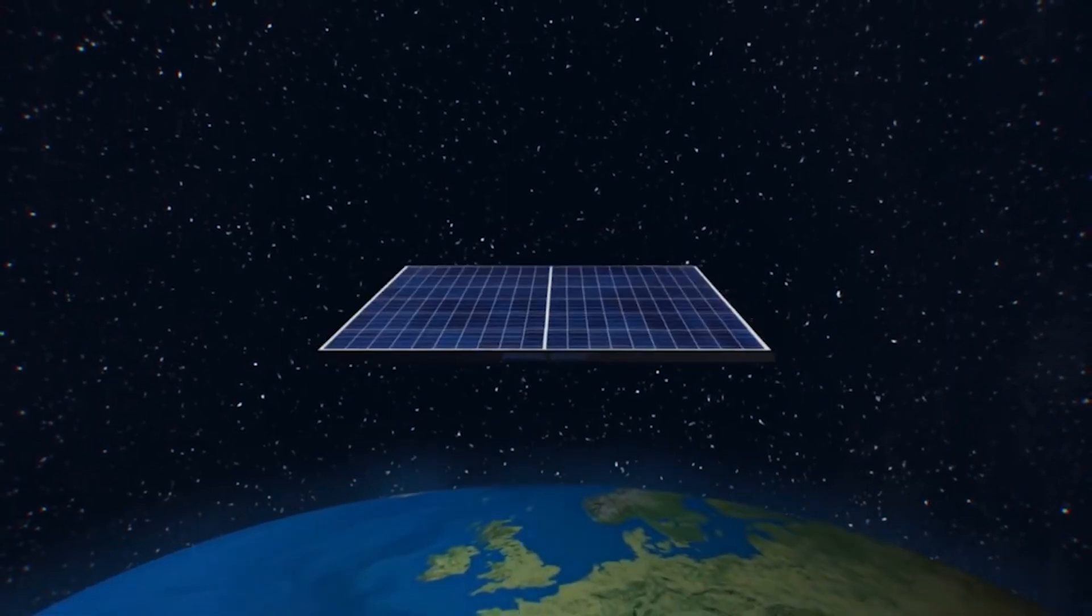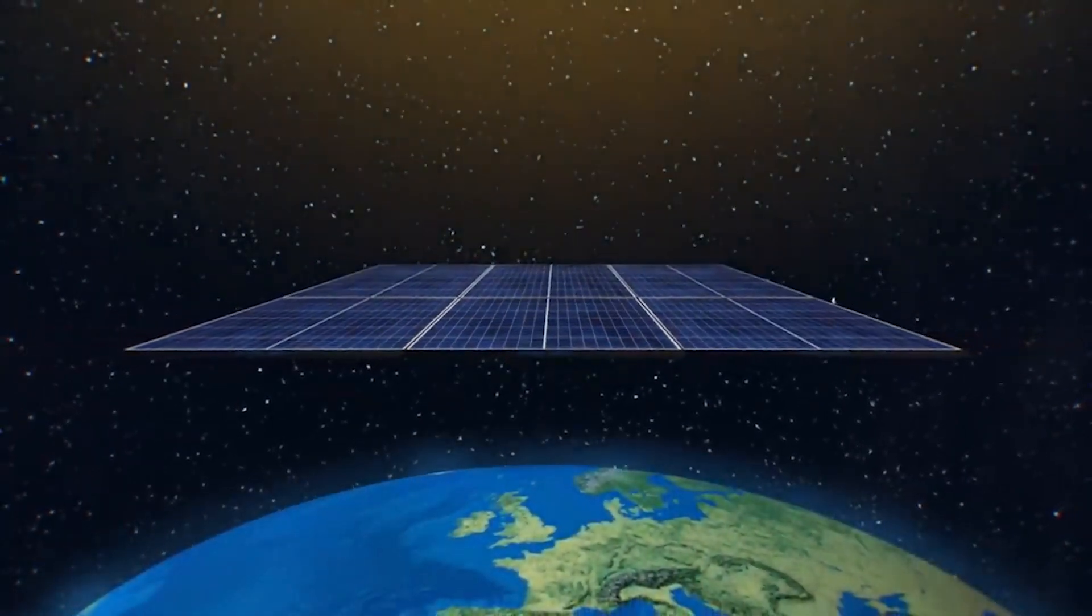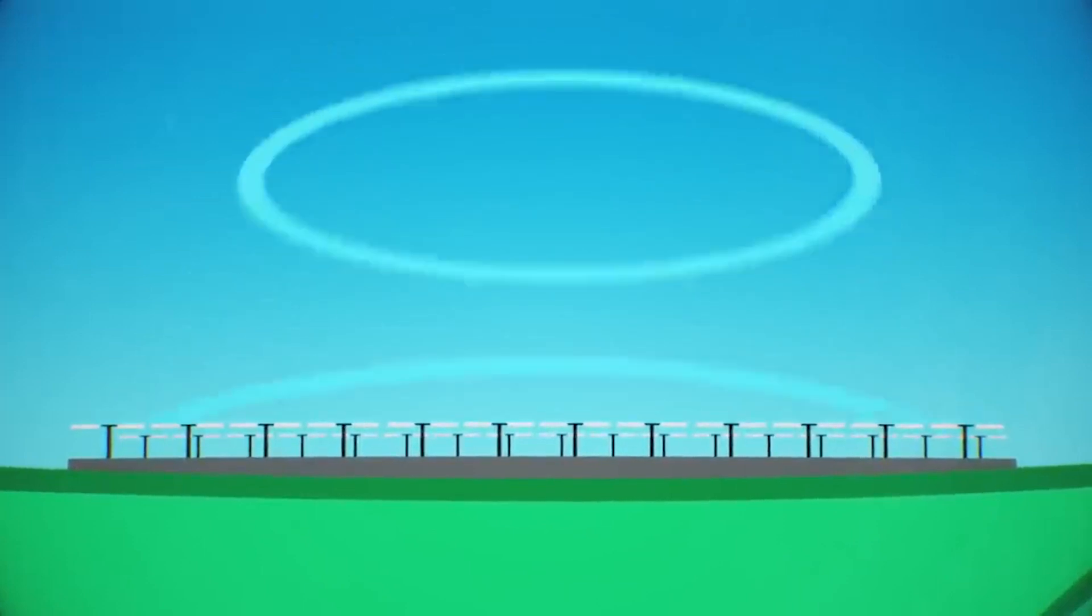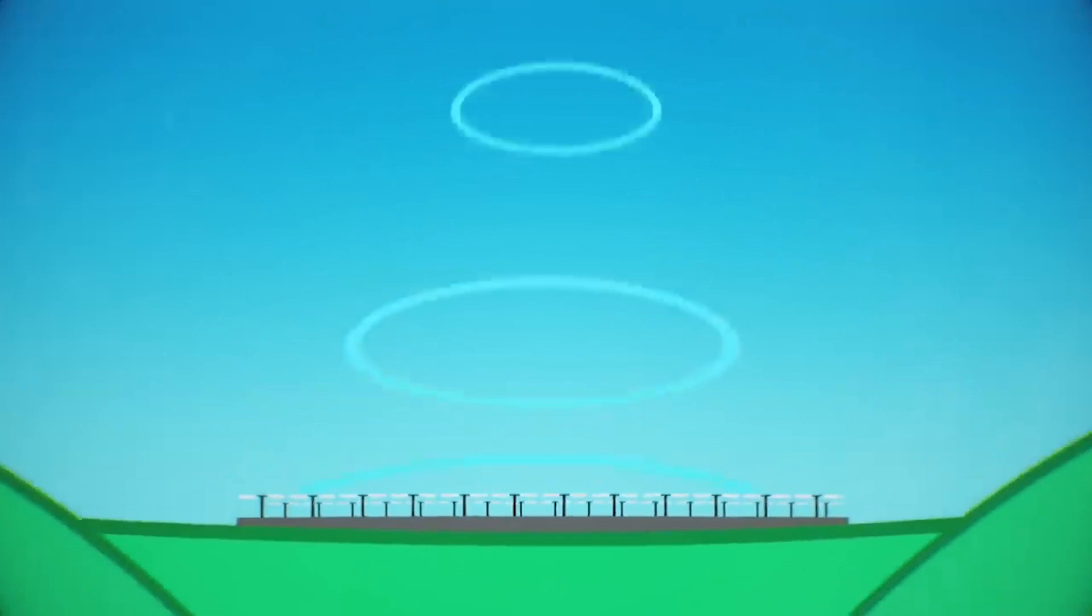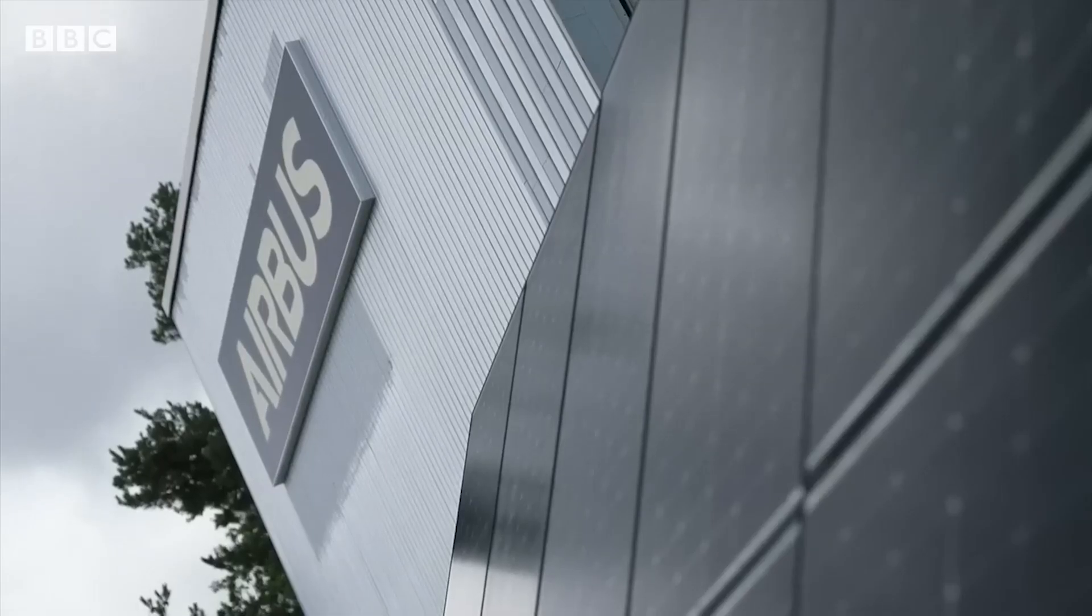The idea is that solar energy would first be captured in space by space-based solar stations. That energy would then be converted into microwave energy which would be transmitted to Earth antennas. Antennas on Earth would then capture that microwave energy and convert it into electricity for use on Earth.